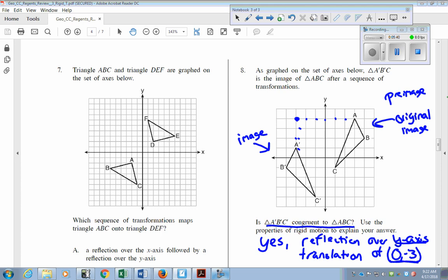And then if it's a rotation, you want to say something like rotation of, and then how many degrees—90, 180—but you need to specify the degree value.